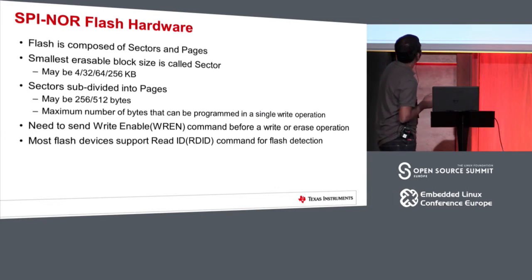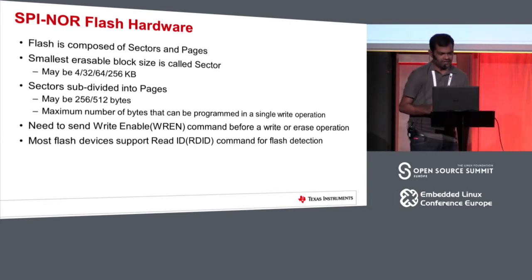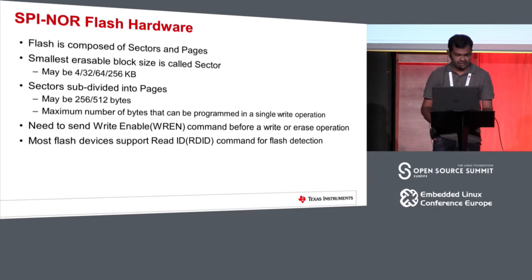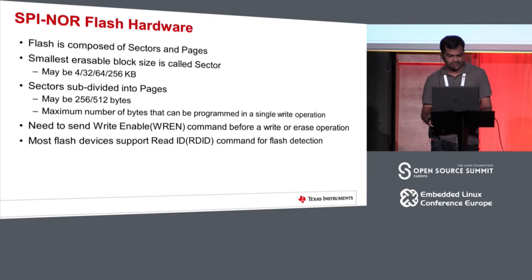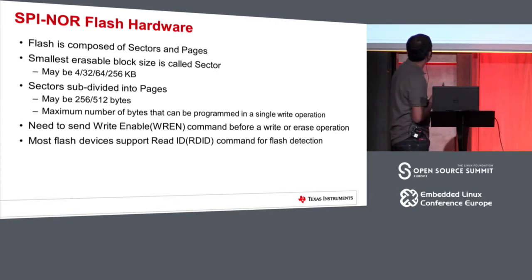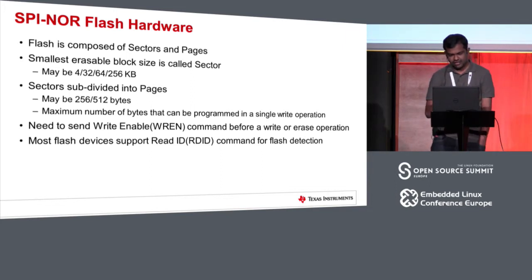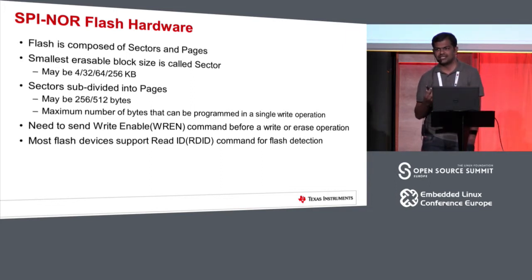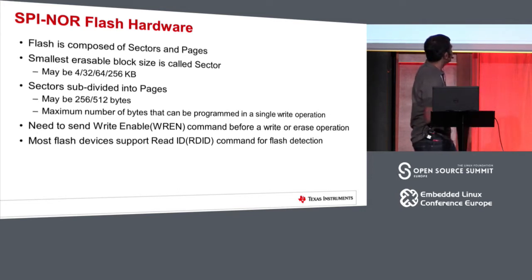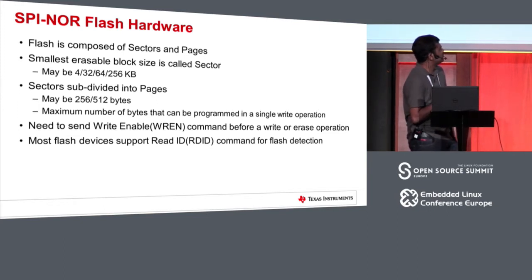A SPI flash is composed of sectors and pages. The sector is the smallest possible erase block size — it may be 4K, 32K, 64K, or 256KB in size. Sectors are subdivided into pages. Pages may be 256 bytes or 512 bytes and represent the maximum number of bytes that can be programmed in a single write operation. Before any write or read operation, we have to set the write enable latch inside the flash by sending the write enable command. This has to be sent for every sector or every page when doing a write operation.